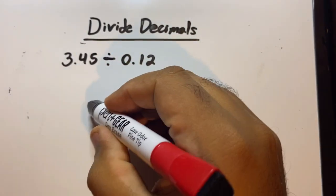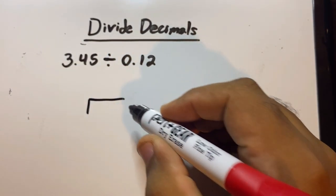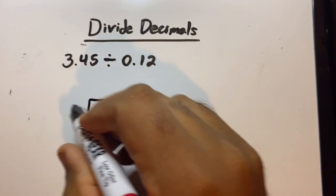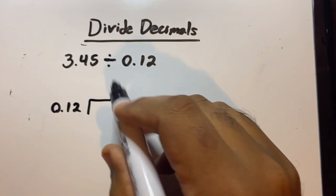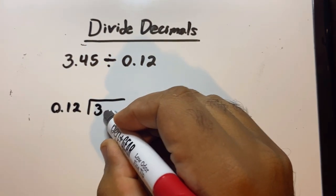When it comes to rewriting this equation, you have to do it like this: the second number goes on the outside, 0.12, the first number goes on the inside, 3.45.